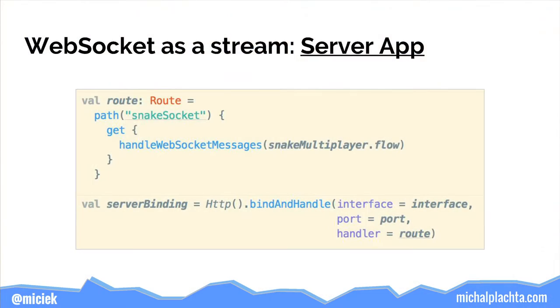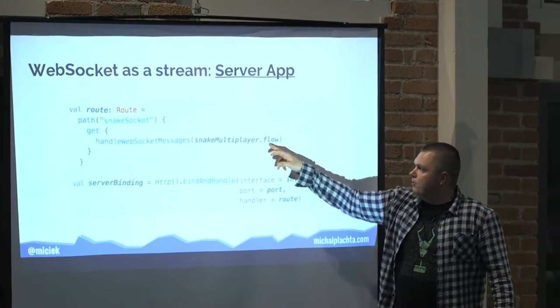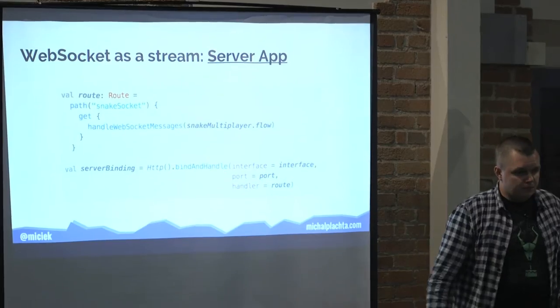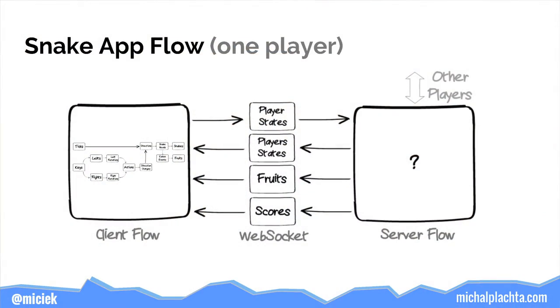To do a stream-based Akka Streams WebSocket application, you need this boilerplate: a helper function `handleWebSocketMessages` and a flow. Our streams connected on the multiplayer side pass through. The `snakeMultiplayerFlow` is the question mark in the middle. The whole application: client flow (the front-end part already seen), player states go right, and back to the client go player states, fruits, and scores.